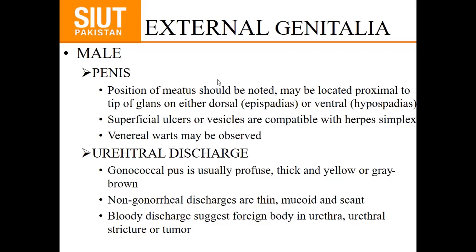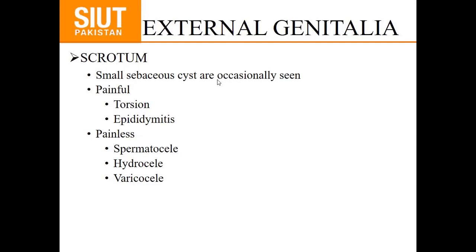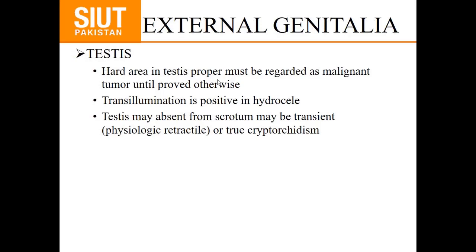Examination of the scrotum may reveal small sebaceous cysts. For painful conditions, examine for torsion and epididymitis. Perform the Prehn's test — elevation of the testis causes relief of pain in epididymitis. If pain is not relieved or increases, suspect torsion. Painless scrotal conditions include spermatocele, hydrocele, and varicocele. For testicular examination, any hard area in the testis proper must be regarded as a malignant tumor until proved otherwise. Perform the transillumination test — it will be positive in hydrocele. Also note the testicular position — it may be absent or transient, as in physiologic retractile testis or true cryptorchidism.